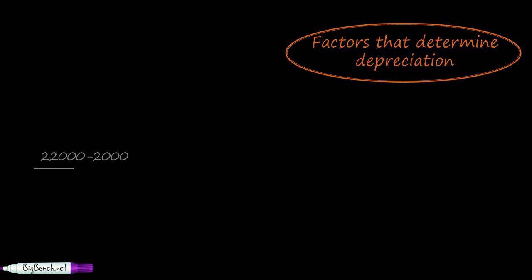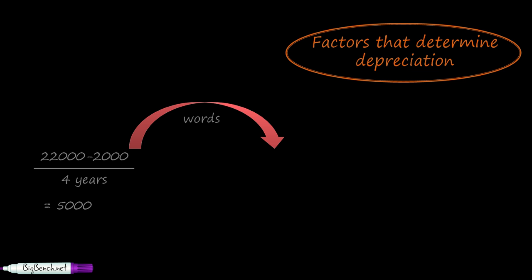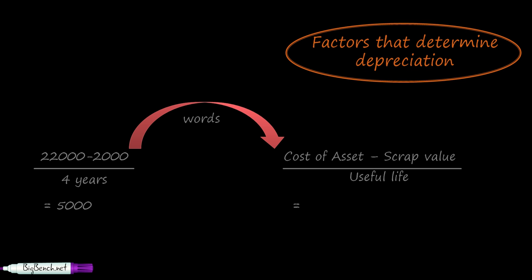Next, the factors that determine depreciation. From our previous example: 22,000 minus 2,000 divided by 4 years gave us 5,000 as the annual depreciation. Converting this into words gives the formula: cost of asset minus scrap value, divided by useful life of the asset, equals depreciation. So the three determining factors of depreciation are: cost of asset, scrap value, and useful life. Thank you so much.